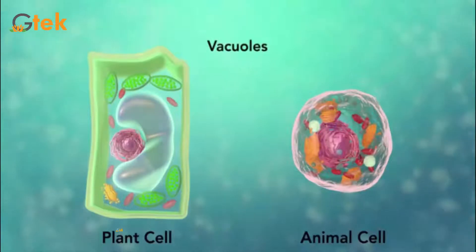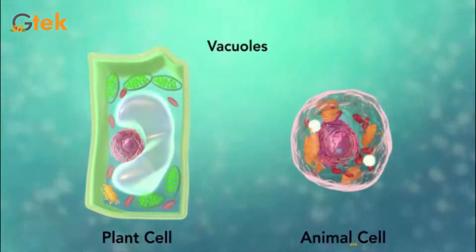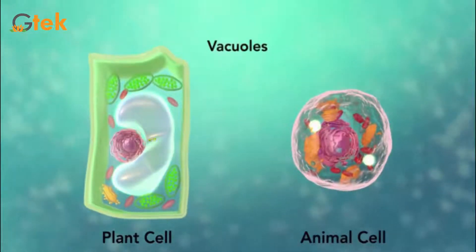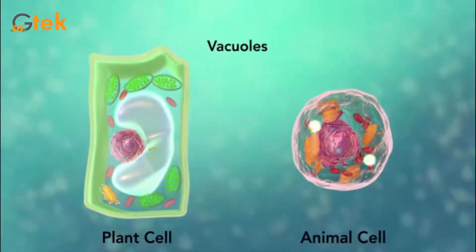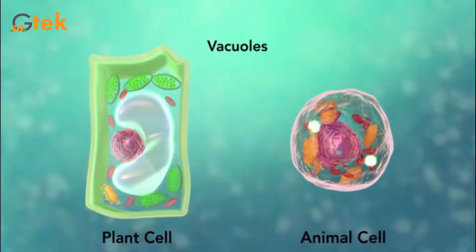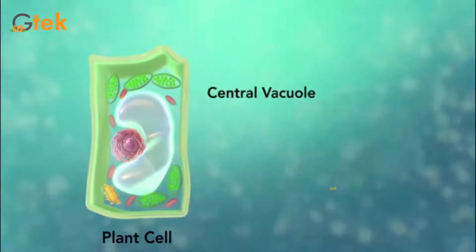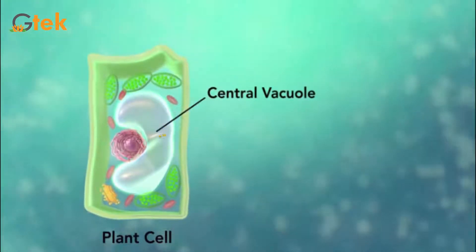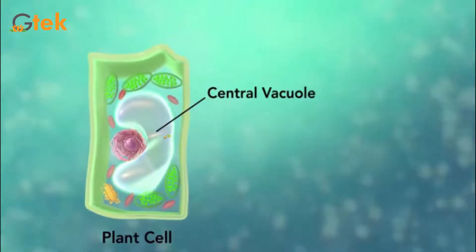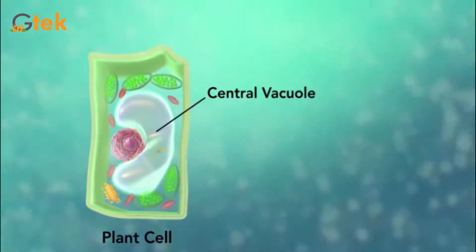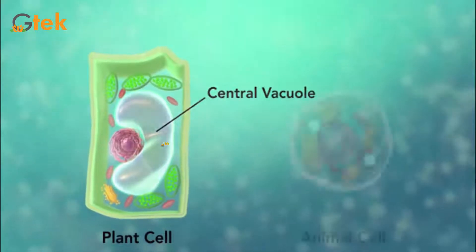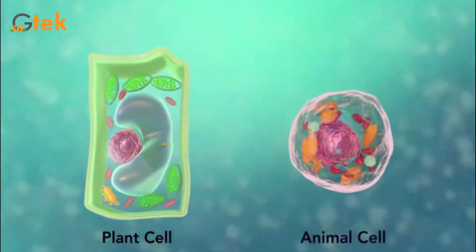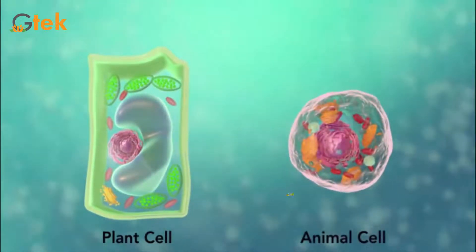Here you can see the plant cell and animal cell. The plant cell contains vacuoles — specifically, it has central vacuoles. But the animal cell does not contain vacuoles.